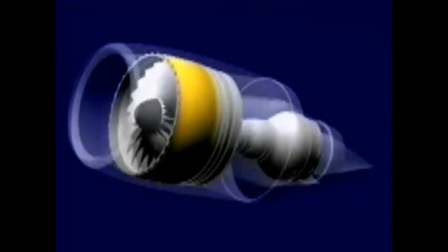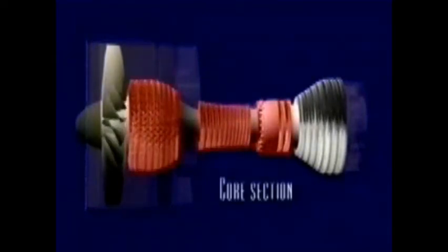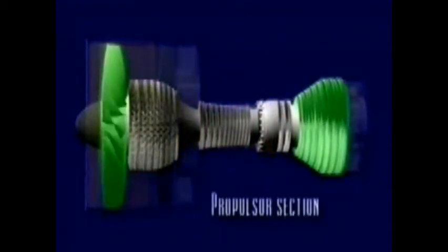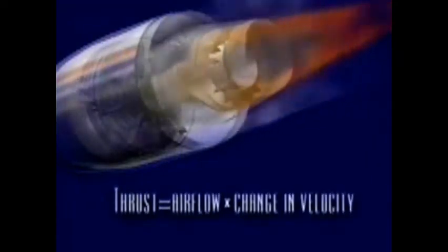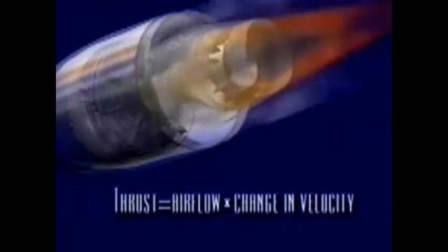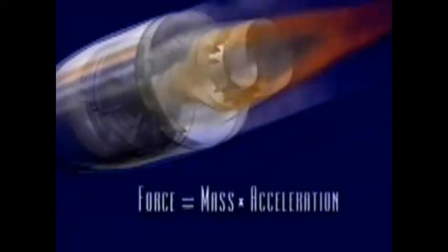The turbofan engine is a complex synchronization of several components working together as two parts: a core section that produces power to drive the propulsor section that produces thrust. Thrust is a force created by the acceleration of air — simply an application of Newton's second law of motion, commonly expressed as force equals mass times acceleration. It is this force that propels the aircraft.